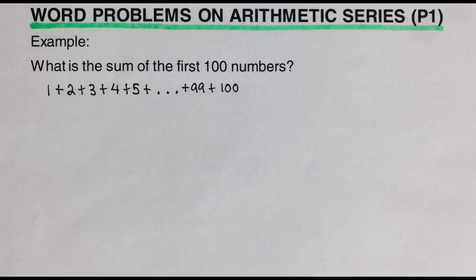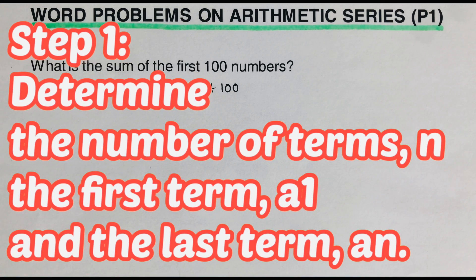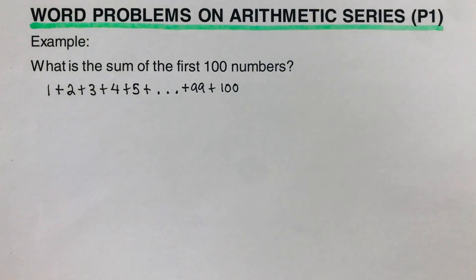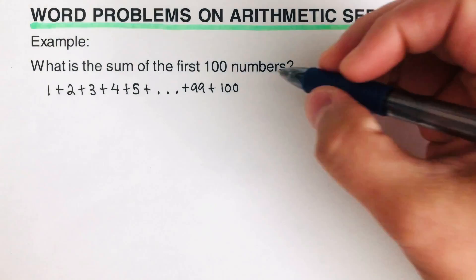So there are steps that we need to follow in order that we can solve this kind of problem. The first step is to determine the number of terms n, the first term a₁, and the last term aₙ. So then I'm just gonna label the steps right here.